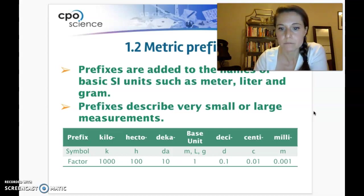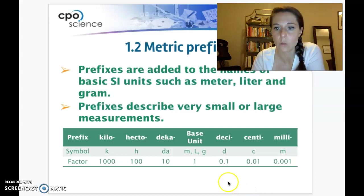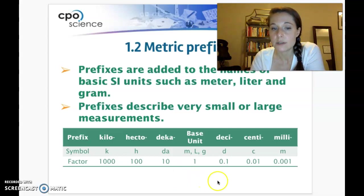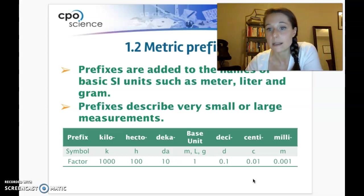You'll notice that the one thing that I want to point out here is deca. Deca has an abbreviation of da, and that's to differentiate it from deci, which is just d. So if I were to ask you, well, what is the symbol for decaliter, you would need to make sure that you write lowercase d, lowercase a, uppercase L, daL.